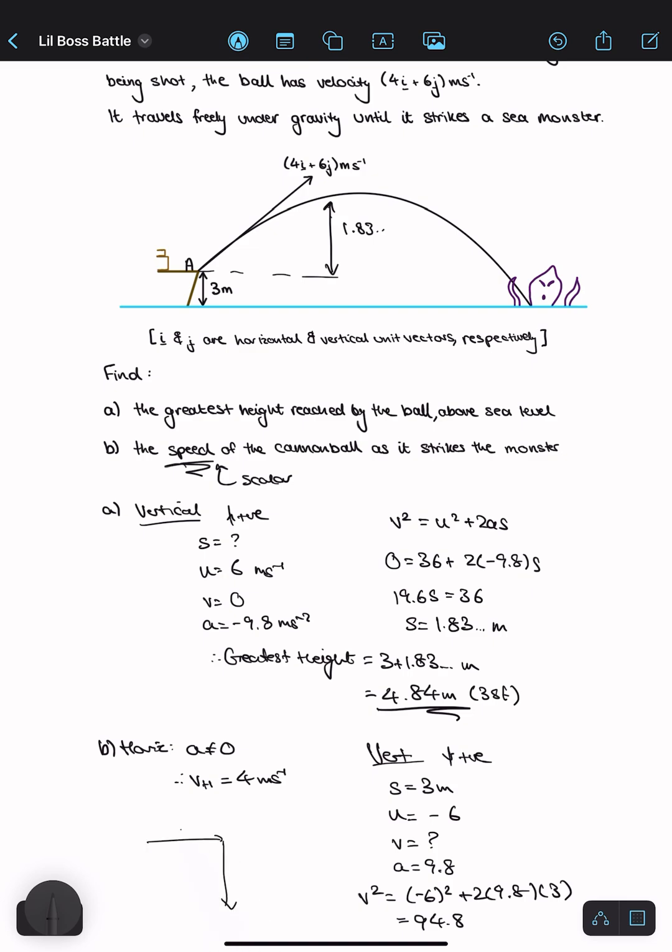So my horizontal velocity component is 4 meters per second and the vertical velocity component is the square root of 94.8 meters per second. The speed is just the magnitude of the velocity.